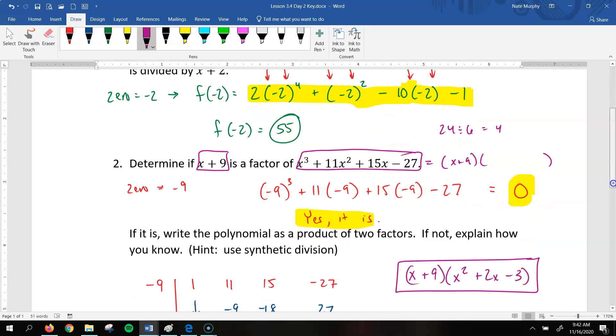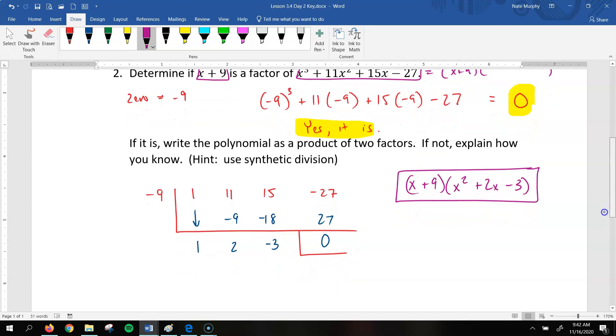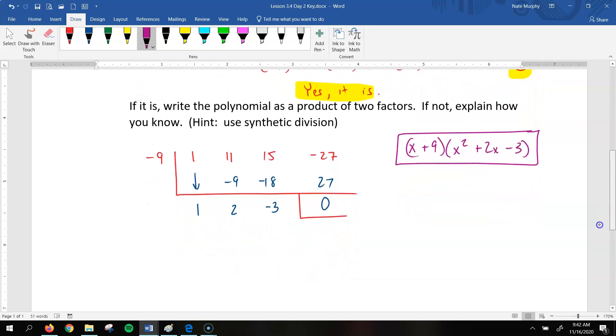So that's what they mean by writing it as a product of two factors. So you've got to figure out what is that piece. So we're going to divide that polynomial again by x plus 9. And one of the ways we could do that is by using synthetic division. So the 0 again was negative 9.